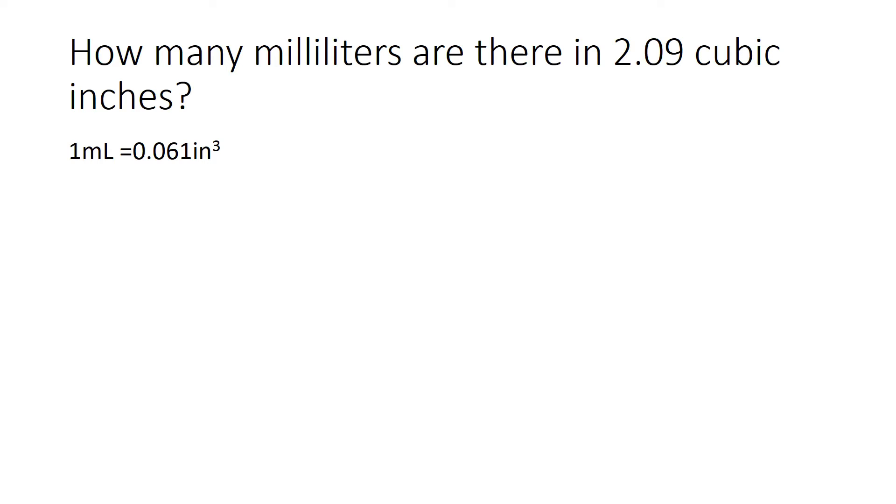So we are going to start by writing our known, which is 2.09 cubic inches. And the first thing we're going to need to do is to extend our line and figure out what our conversion factor is, which is going to go above or below the line. So we know that 1 milliliter is equal to 0.061 cubic inches.